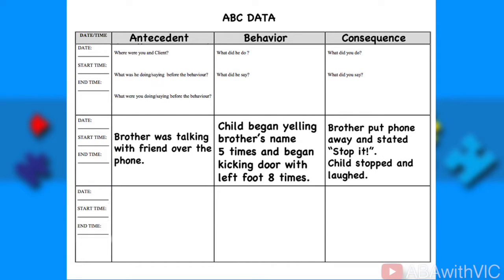Here's another example. The antecedent is that the brother was talking with a friend over the phone. The behavior was the child yelling the brother's name five times and kicking the door with the left foot eight times. The consequence was the brother putting away the phone and saying 'stop it,' after which the child stopped and left. This is an example of attention-seeking behavior — the function is attention.